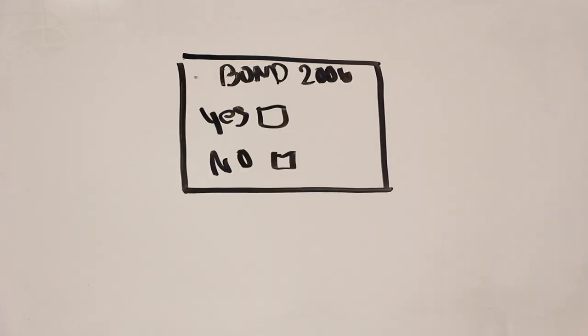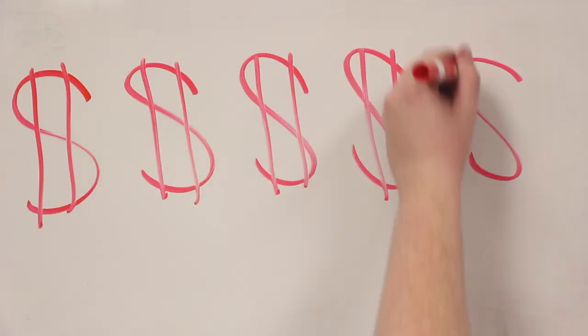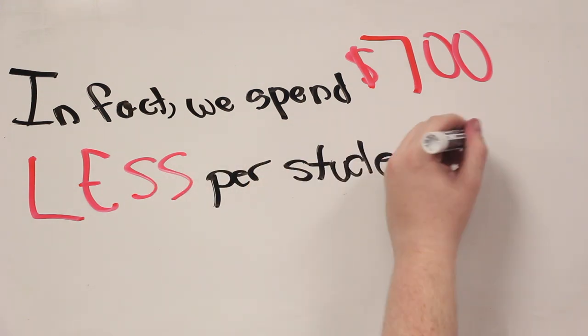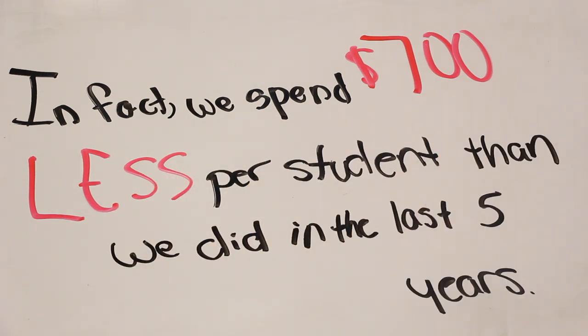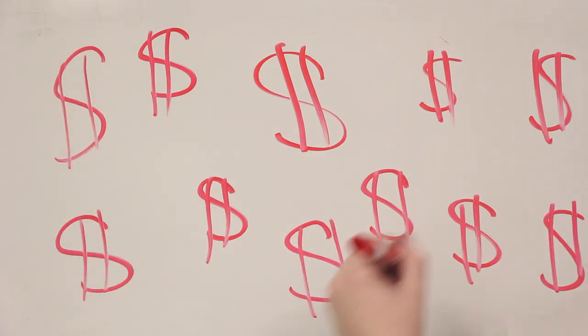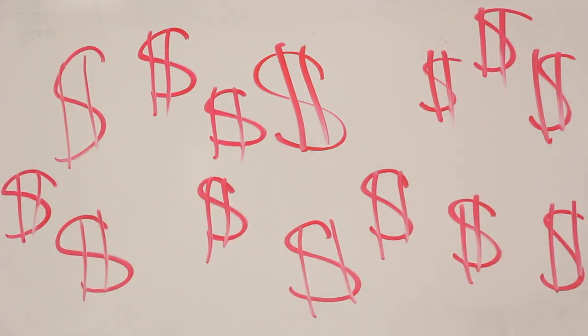The last time Verde Valley voters passed a bond was in 2006. That's almost nine years ago. So all that money that Mingus had disappeared. In fact, we spent nearly $700 less per student than we did five years ago. That may not sound like much, but consider how many students have been through Mingus in the last five years. Those dollars really add up.